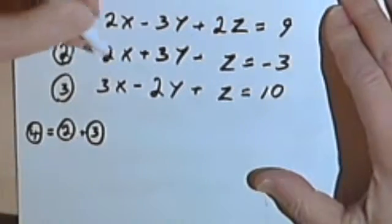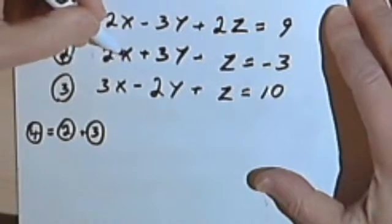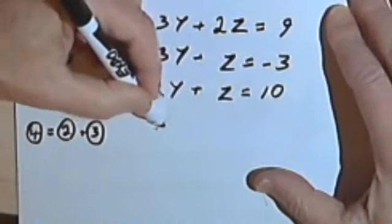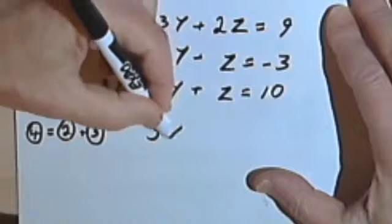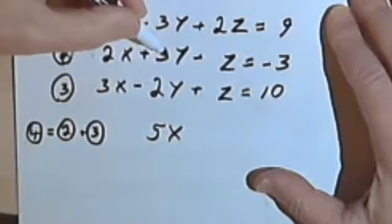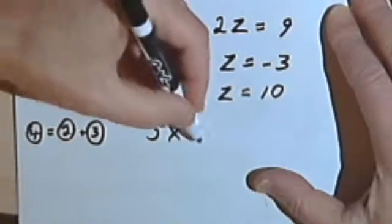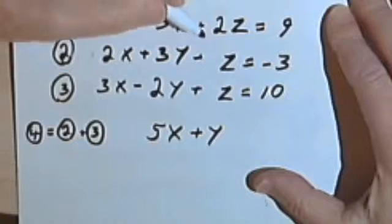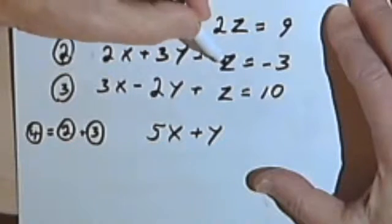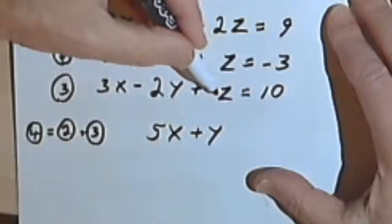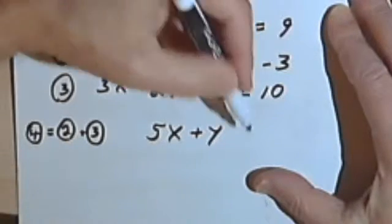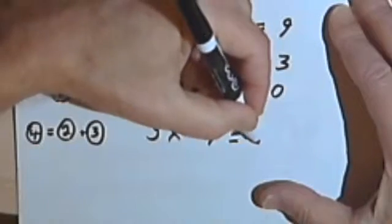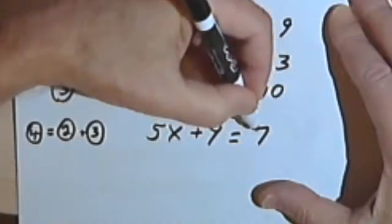Adding those together, I have 2x plus 3x is 5x. And 3y minus 2y is y. The negative z and positive z are going to cancel. And then I have negative 3 plus 10, which is 7.